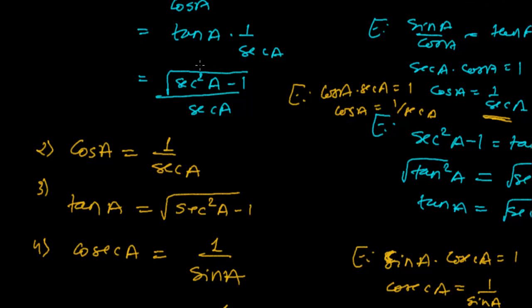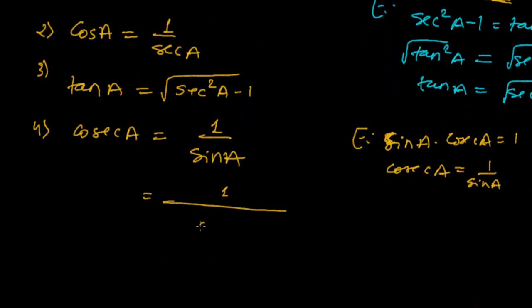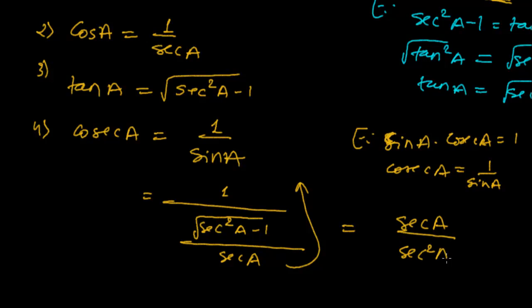this sec square A minus 1 under root upon sec A. Sec square A minus 1, this is under root sec A. So this sec A will go upside. Now it is sec A upon sec square A minus 1. So now again I converted this cosec A into the sec A form.